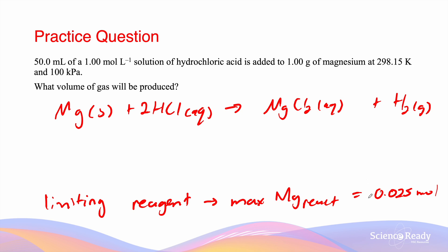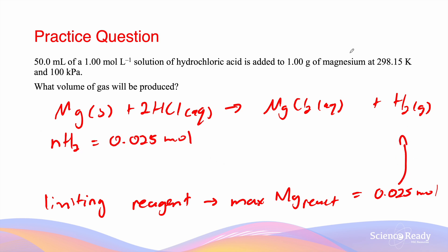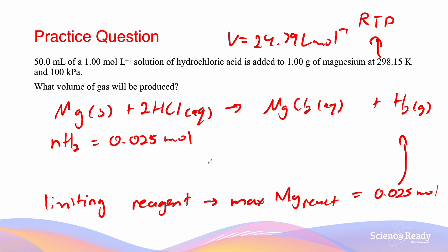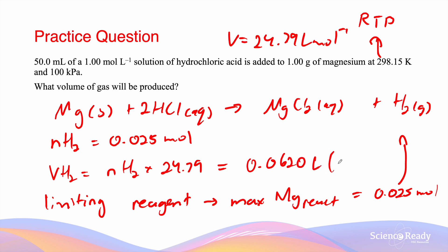Now we know the moles of Mg that reacted. We want to find the moles of H₂ produced. The ratio of Mg to H₂ is 1:1, so we have 0.025 moles of H₂. At RTP the molar volume is 24.79 L/mol, so volume of H₂ = 0.025 × 24.79 = 0.620 liters, given in three significant figures.